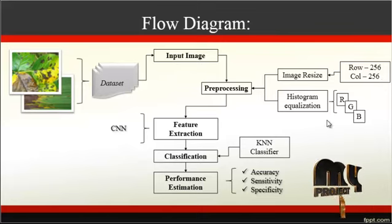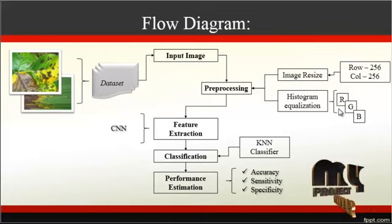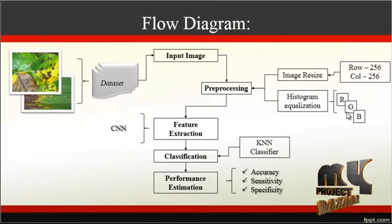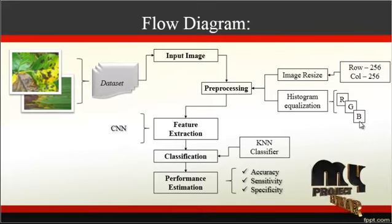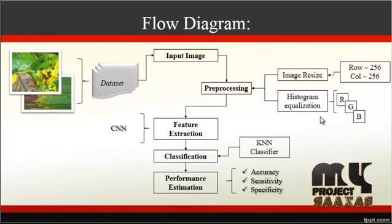After the image resize, histogram equalization will be carried out. In this histogram equalization, the image is converted into sub-bands like RGB: R represents the red channel, G represents the green channel, and B represents the blue channel. After converting to red, green, blue channels, histogram equalization will be carried out for each and every channel.